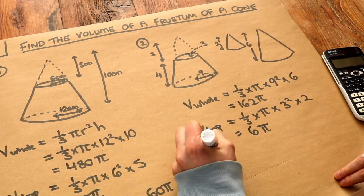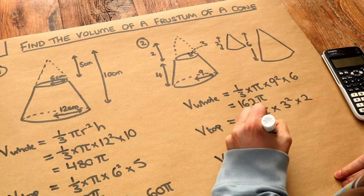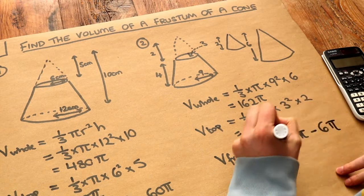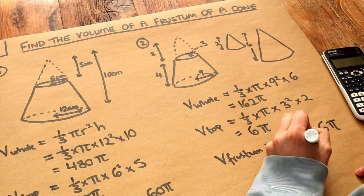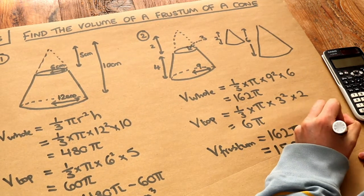And then you just subtract them. So the volume of the frustum is equal to 162 pi minus 6 pi. And that is equal to 156 pi. And if you want a unit, because there's no unit here, we could put units cubed, but that's optional.